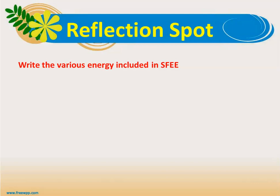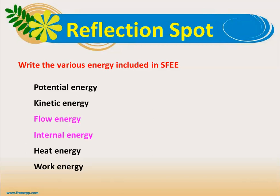Reflection spot: write the various forms of energy included in the steady flow energy equation. The answer is: potential energy, kinetic energy, flow energy, internal energy, heat energy, and work energy. Flow energy and internal energy are combined together and called enthalpy. These are all the energy terms used in the derivation of the steady flow energy equation.